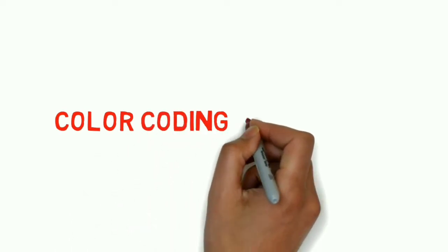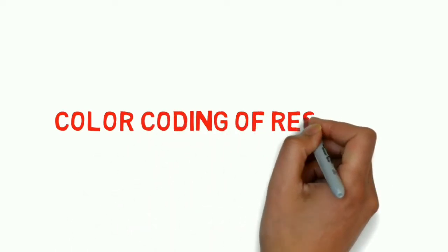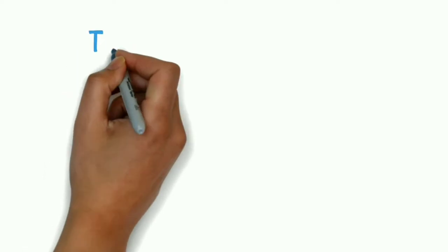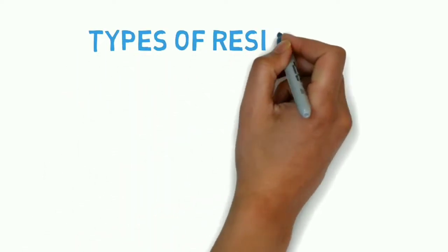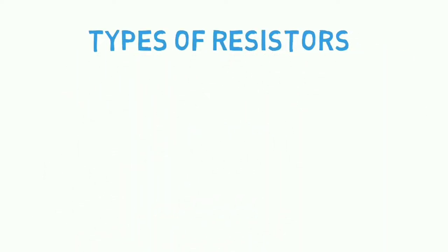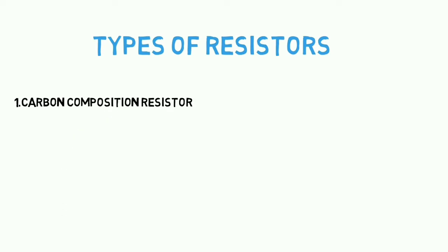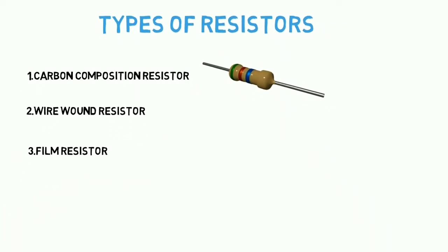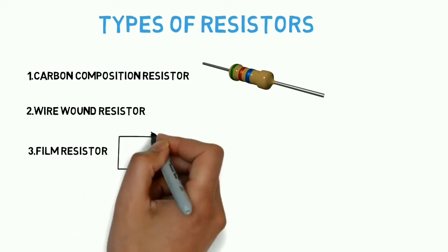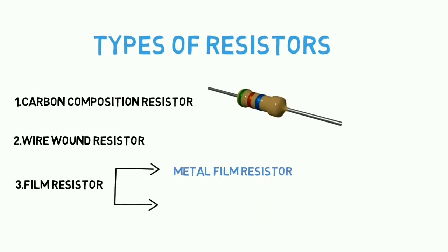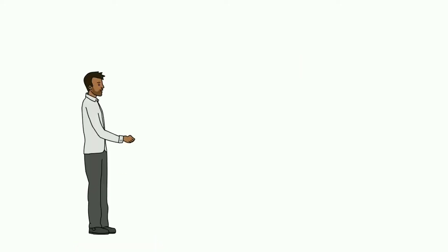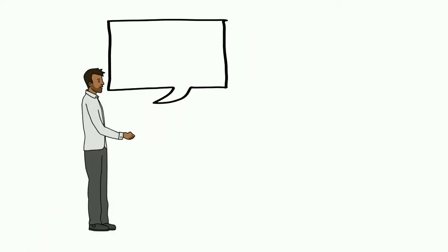Welcome to Color Coding of Resistors. Let's talk about the most important types of resistors: Carbon Composition Resistors, Wire Wound Resistors, and Film Resistors. Two of them are called Metal Film and Carbon Film. As you can see, there is a Carbon Resistor.